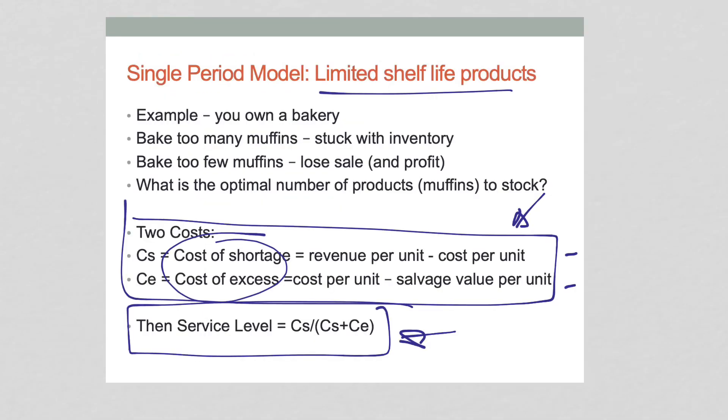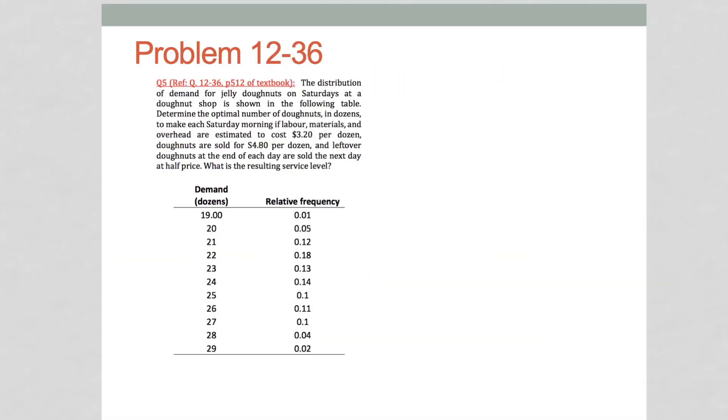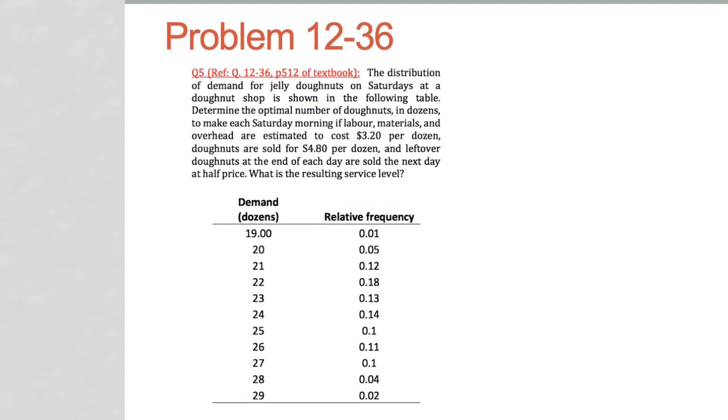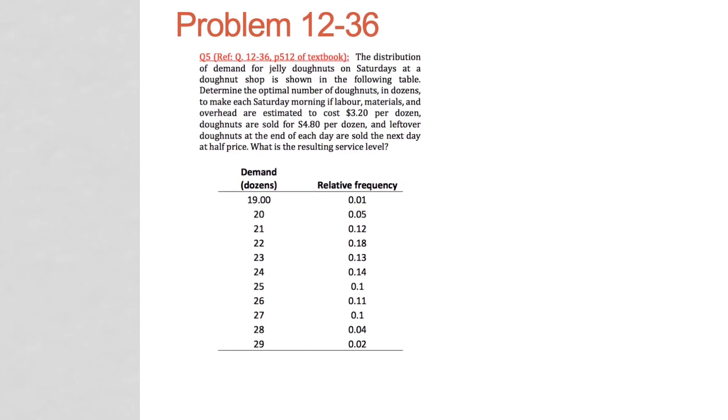The best way to do this, given that information, is let's do an example, and then we'll have a very good understanding how to solve this kind of problem. The distribution for demand for jelly donuts at a donut shop is shown in the following table. Determine the optimal number of donuts. How many donuts should we bake in dozens to make each Saturday morning, given the following costs?